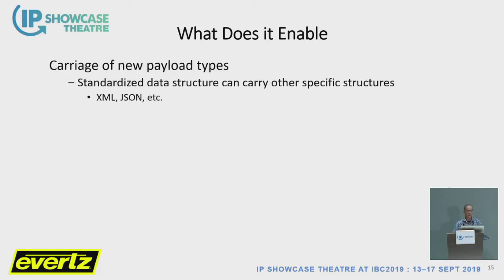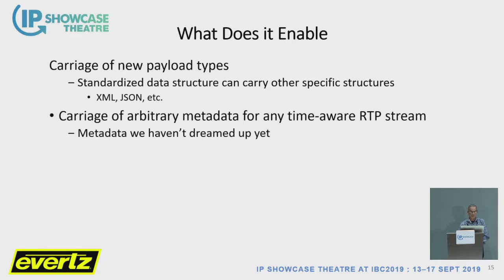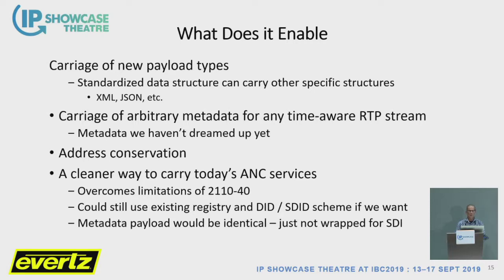So what does it enable? We can carry new payload types. We can carry data structures such as XML and JSON or whatever we want inside one of these. There's been some argument about whether to do JSON or XML — if we do a KLV structure, we can put either one inside. We can carry arbitrary metadata — metadata we haven't even dreamed of yet. That's the whole point of the standard: when we come to a point in some future application where we want metadata, we have a bucket to put it in. It will help address conservation, and it's a cleaner way to carry today's ancillary services. It will overcome the limitations of Dash-40. We could still use the existing registry and DID SDI structure of ST291 if we wish, and the metadata payload in that case would be identical, just not wrapped for SDI.